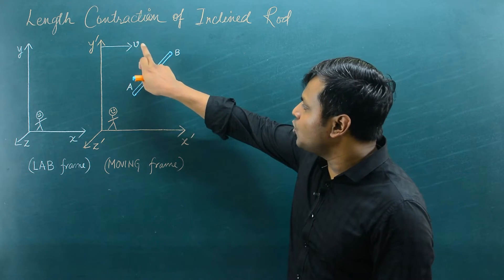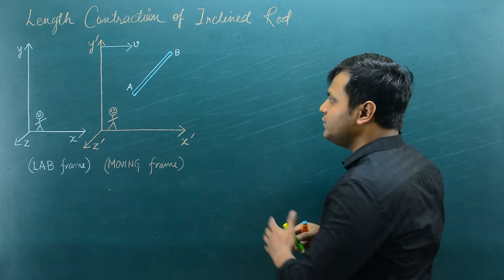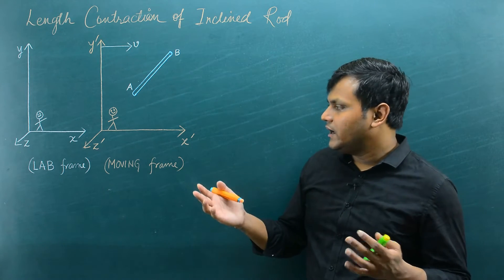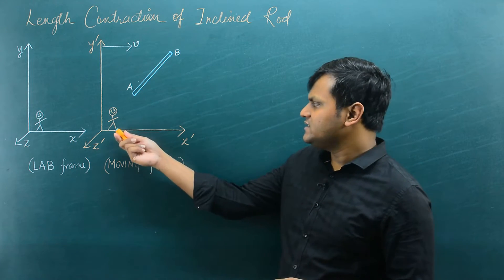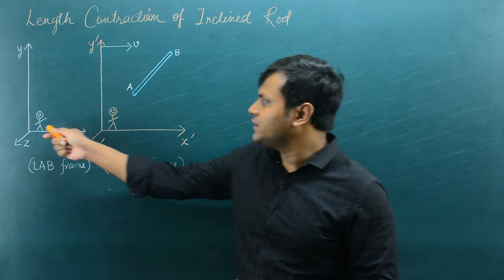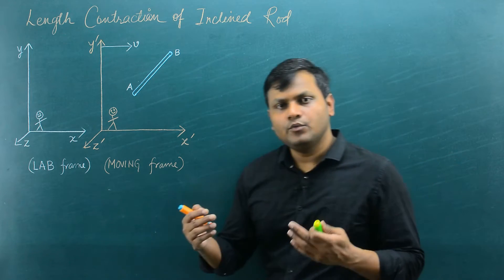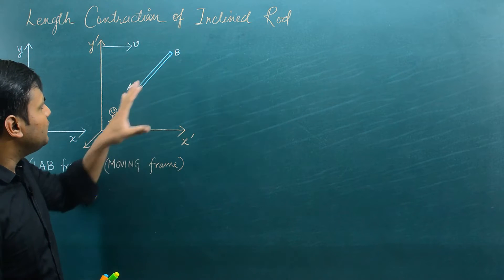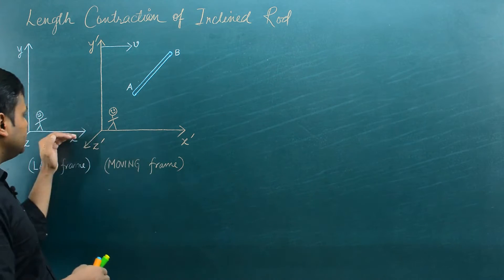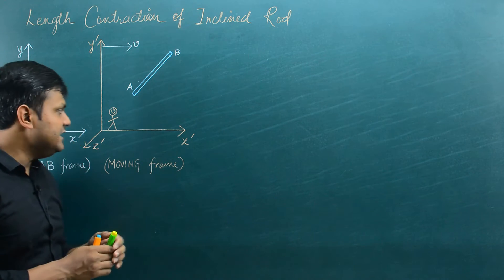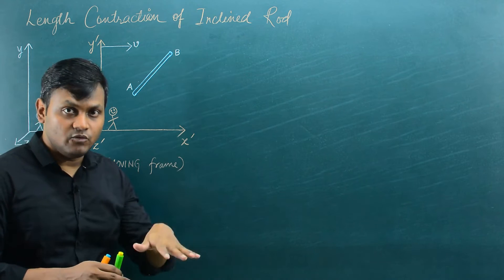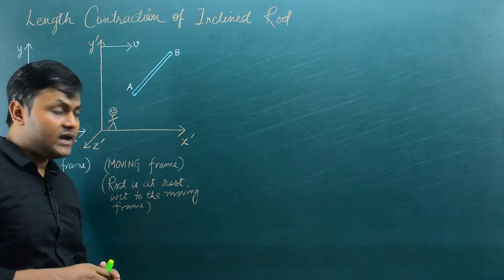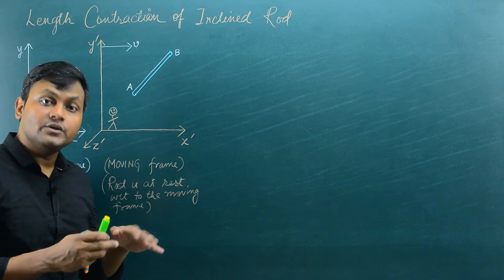Now let's suppose the relative motion is only along the direction of the x, x dash axis. The moving frame could be anything — a person in a train, a spaceship — in which an observer is moving with respect to a lab frame. Now let's suppose I provide a rod to the person in the moving frame such that this rod is at a particular angle with respect to the direction of relative motion along the x, x dash axis. One very important observation: because the rod is present in the moving frame, the rod is at rest with respect to the moving frame. Therefore, the observations made by this observer will correspond to the proper length of that rod.